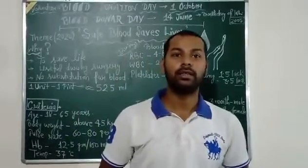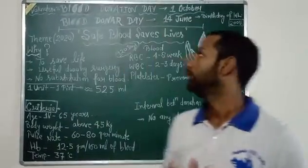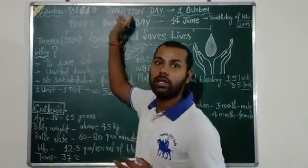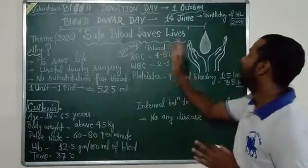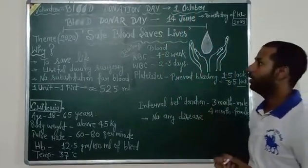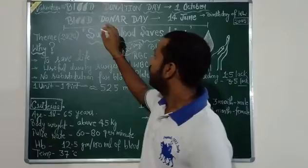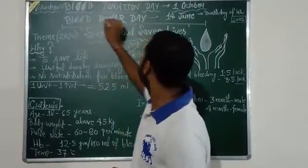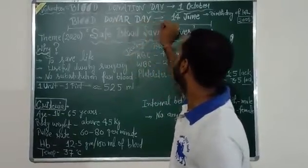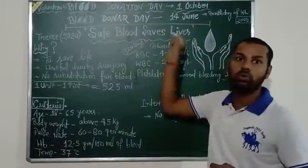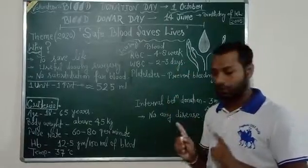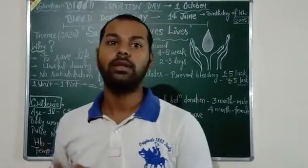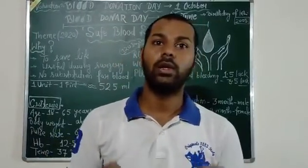Hi guys, today we will discuss the important project related to Blood Donation Day — Volunteers Blood Donation Day, which is celebrated on 1st October. This day is celebrated twice a year. The second day is Blood Donor Day, celebrated on 14th June. 14th June is Blood Donor Day, and 1st October is Volunteers Blood Donation Day.